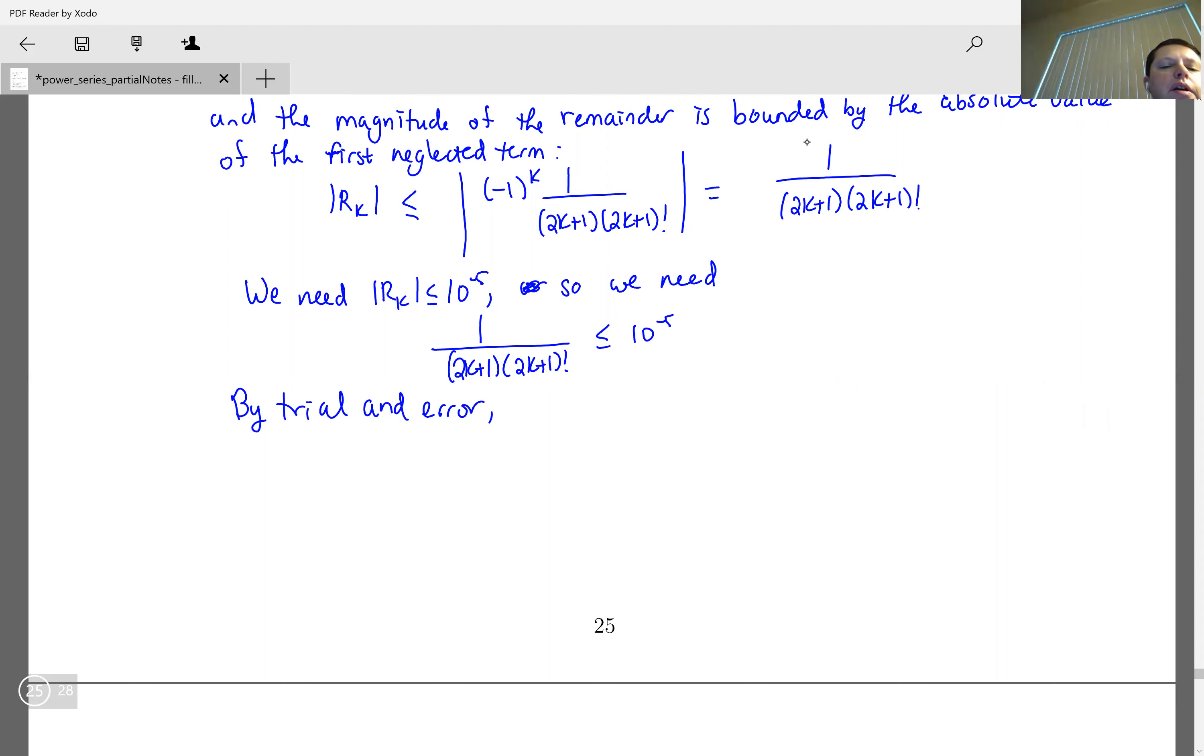We see that this is true if 2k plus 1 is greater than or equal to 8, which means that k is going to be greater than or equal to 7 halves. So in other words, k equals 4.